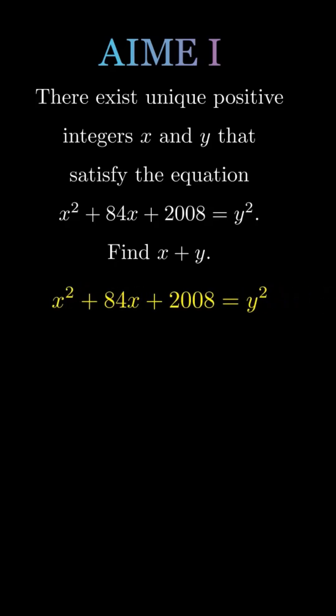We complete the square. x squared plus 84x becomes x plus 42 squared minus 42 squared. Simplifying,